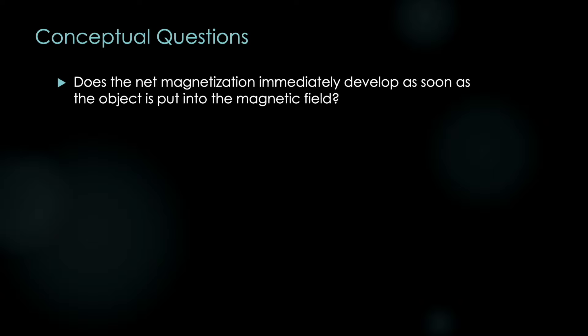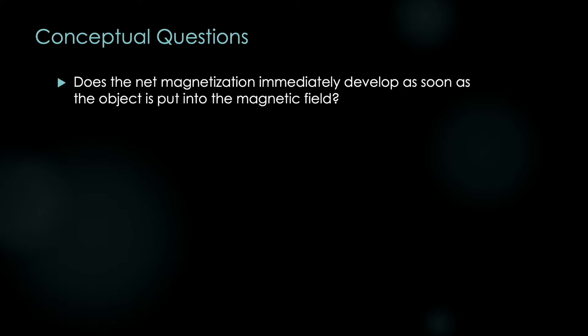So throughout this lecture, we're going to ponder some conceptual questions. A lot of these are questions I had when I was trying to figure this out. So does the net magnetization immediately develop as soon as the object is put into the magnetic field? Or maybe a better question, does anything just instantly happen in life? So the answer is no, it takes time for it to reach its maximum value, growing as a simple exponential with time constant called T1. More on this to come. You may have even been shown a graph that looks something like this. Here we have net magnetization along the y-axis, time along the t-axis. And we can tell that something is growing with respect to time, reaching a plateau at some maximum value.